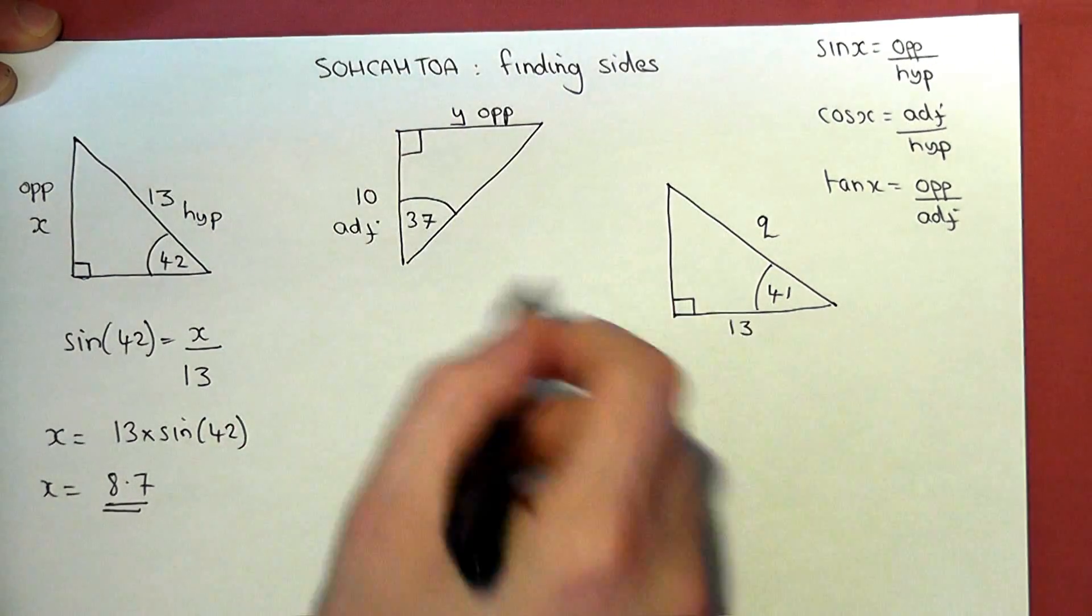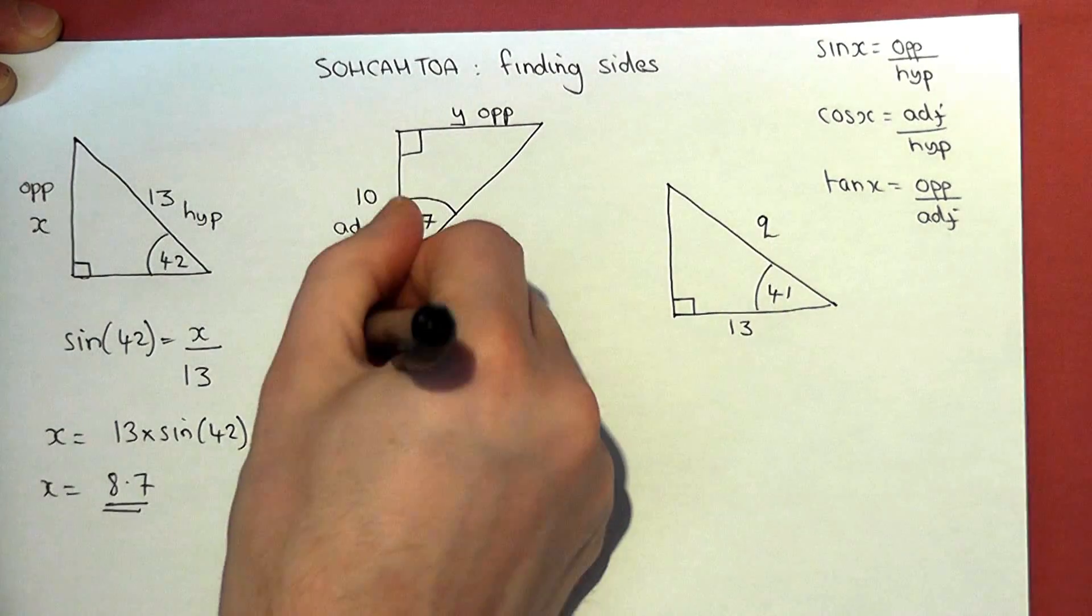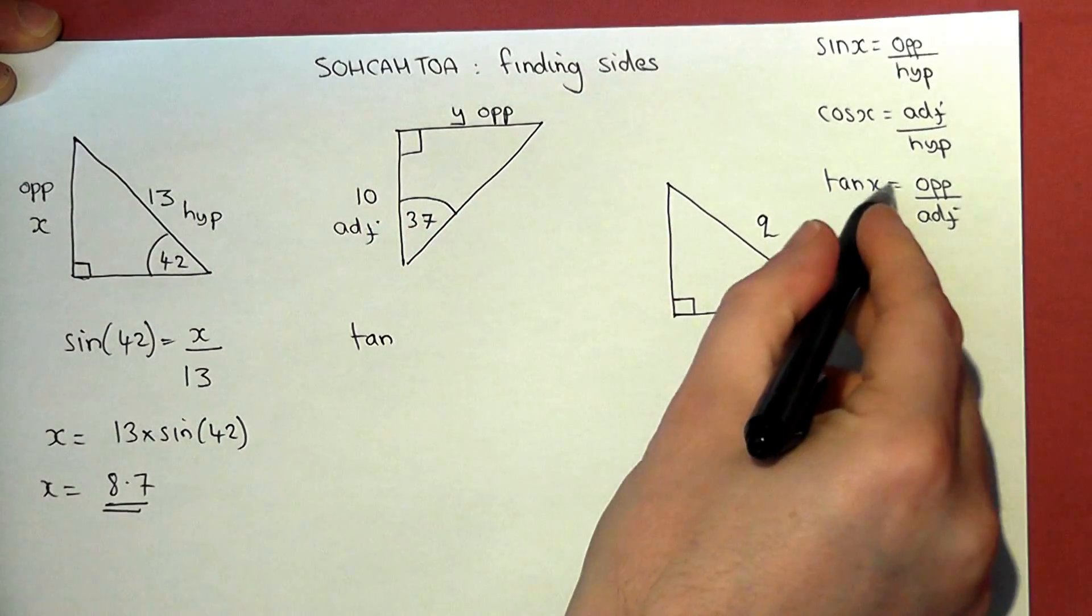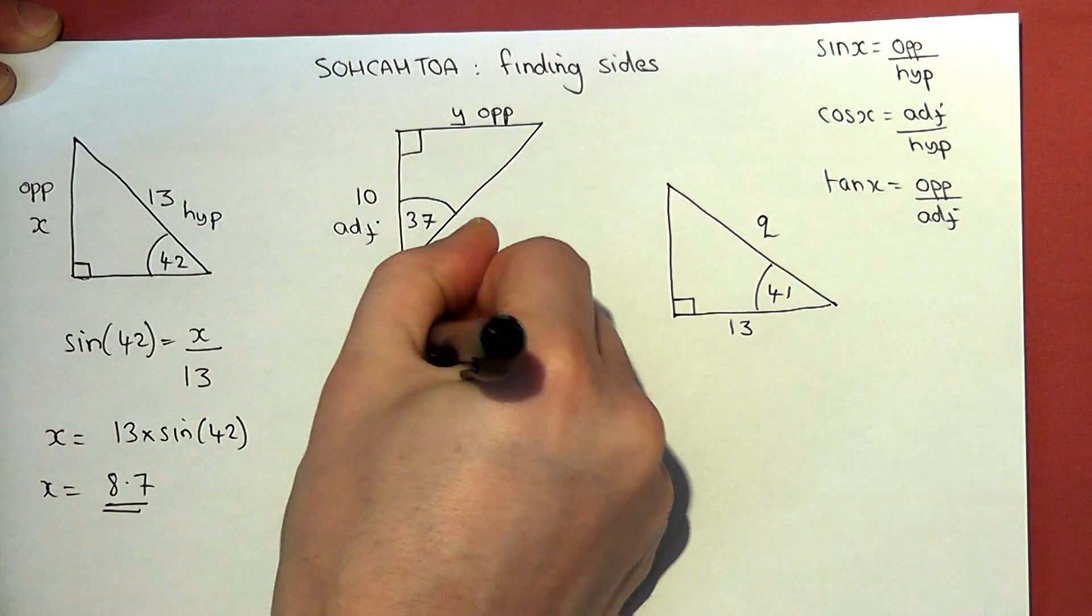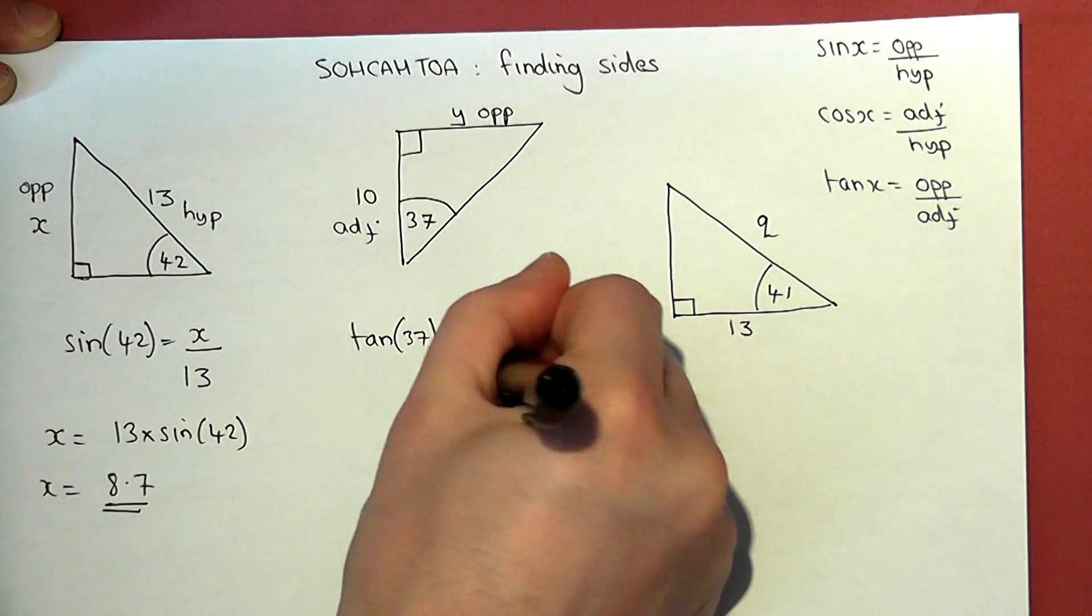So again, adjacent opposite is tan. So tan of the angle, 37, equals opposite y over the adjacent.